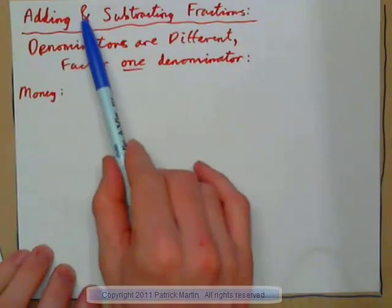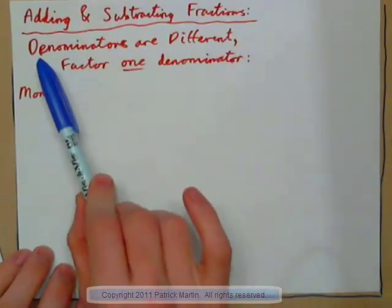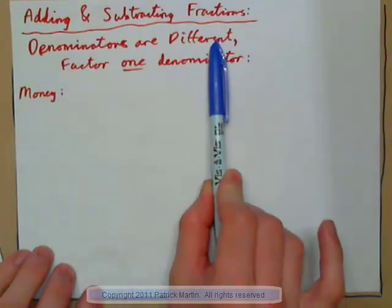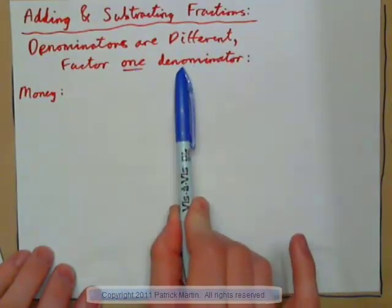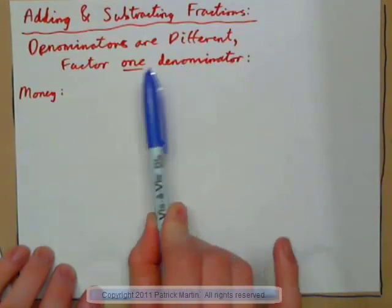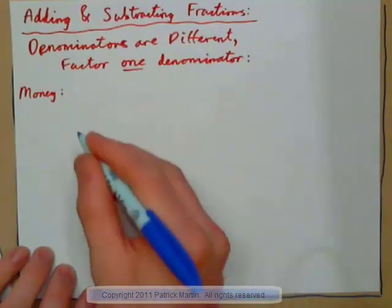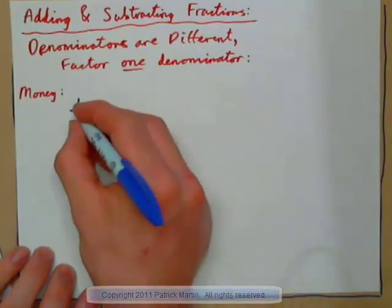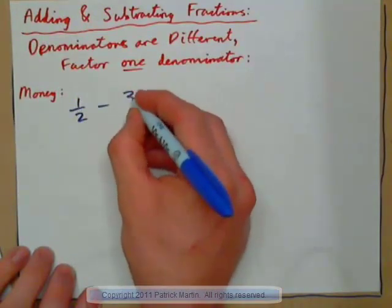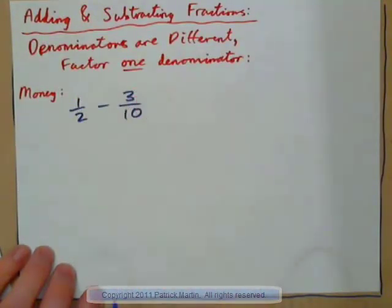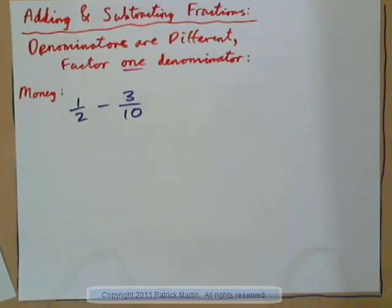Adding and subtracting fractions when the denominators are different. We're going to look at examples where we need to factor one denominator — that's one bottom of a fraction. Let's take an example with money: 1 half of a dollar subtract 3 dimes — 3 tenths. What do you think that is? Write down the answer.